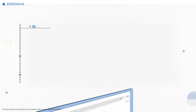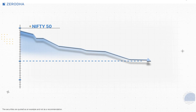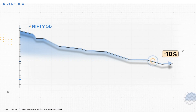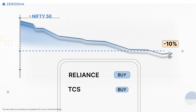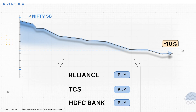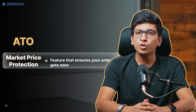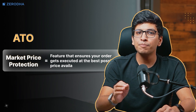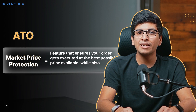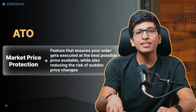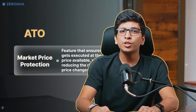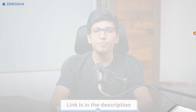Now when Nifty drops by 10% from the current price, the ATO will be triggered and an order to buy Reliance, TCS and HDFC Bank will be placed on the exchanges. All market orders in an ATO will be placed with market price protection, a feature that ensures your orders get executed at the best possible price available while also reducing the risk of sudden price changes. To learn more about market price protection, check out the link in the description below.